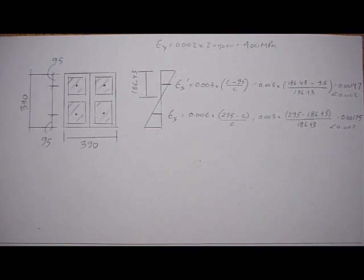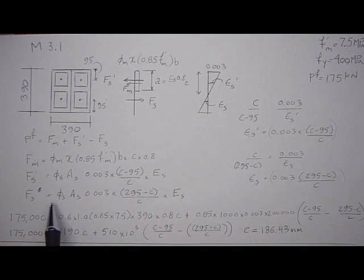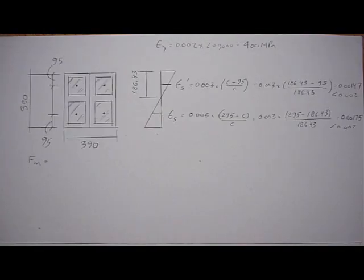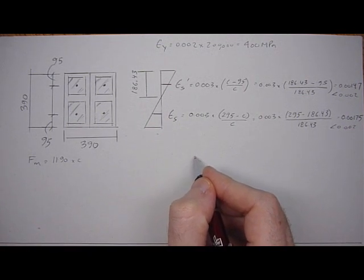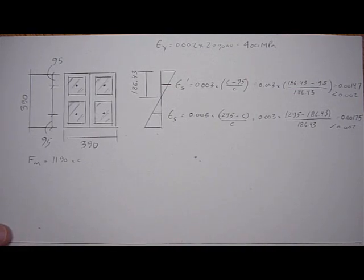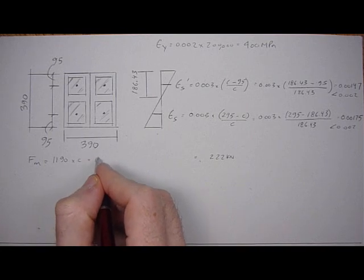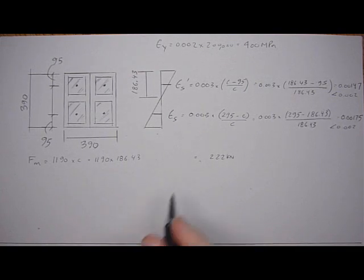So we can continue and calculate the forces in the masonry and steel. Referring back to example 3.1, the force in the masonry was this equation: 1190 times C. We found it equals 1190 times 186.43, which is 222 kilonewtons.